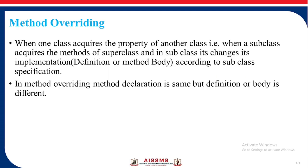Method overriding: when one class acquires the property of another class — that is, when a subclass acquires the methods of a superclass — and the subclass changes the implementation of the method body according to its own specification. In method overriding, method declaration is the same but the definition of the body is different.